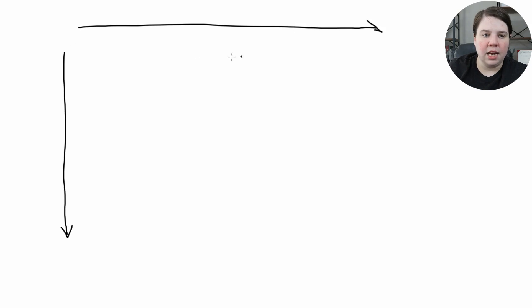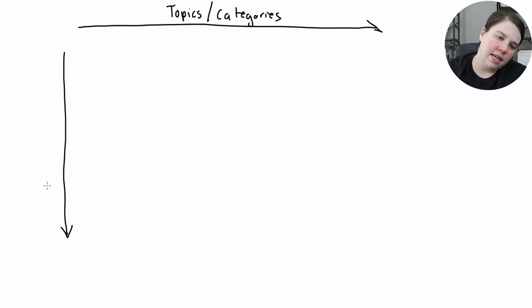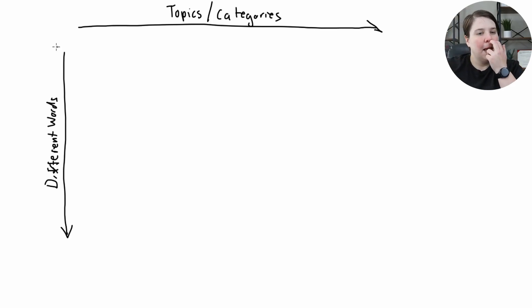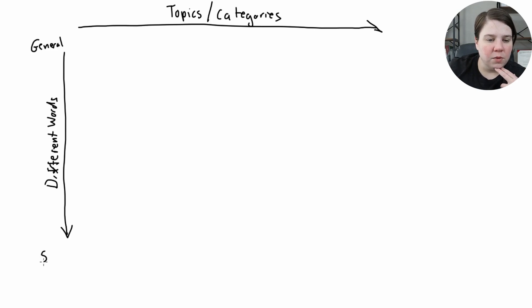I'm going to jump on to my computer so you can see what I'm doing. The first thing I need to do is start determining what are the keywords I'm going to search to find these different reviews. I'm going to go both wide and long here — these two sides represent different topics or categories, and then different words within each.